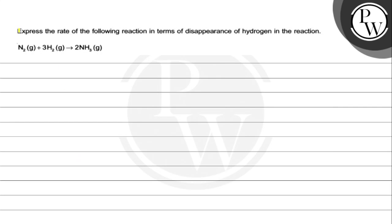Hello, let's see this question. It says express the rate of the following reaction in terms of disappearance of hydrogen in the reaction. The reaction is N2 gaseous plus 3H2 gaseous gives 2NH3 gaseous. So the key concept for this question is rate of reaction.